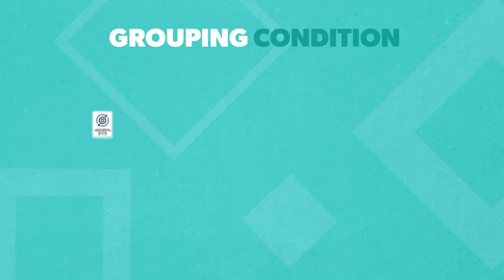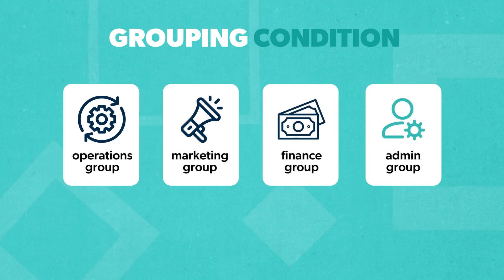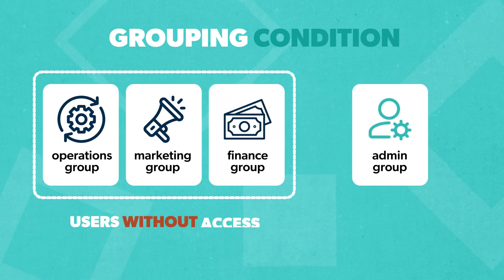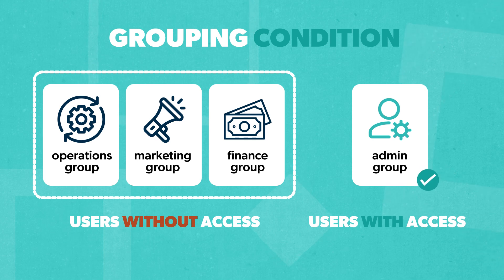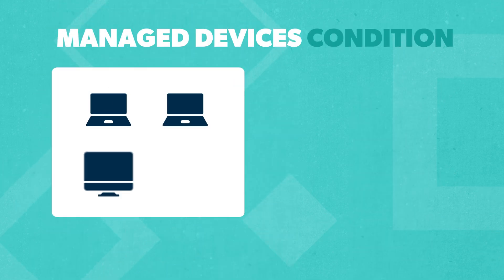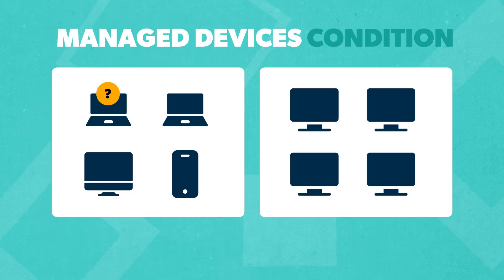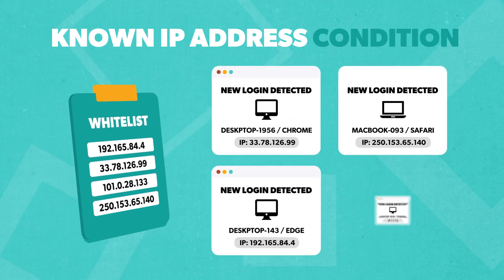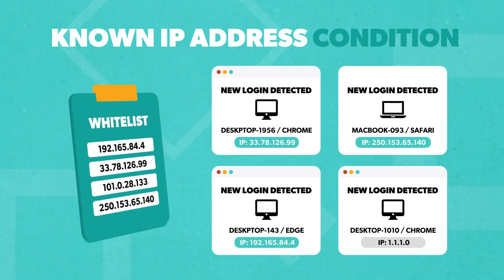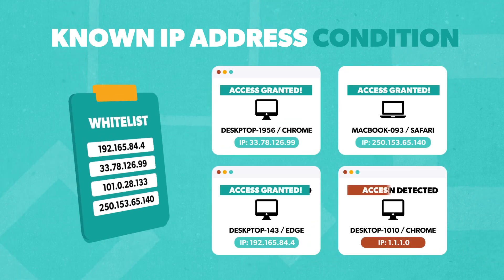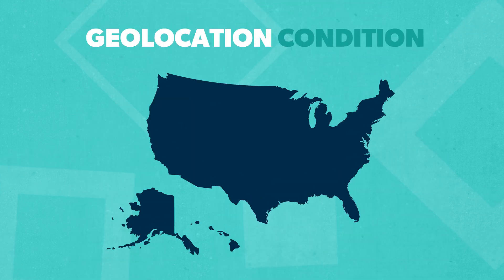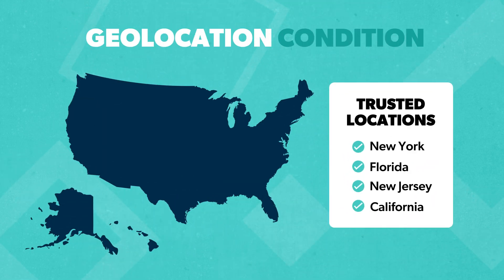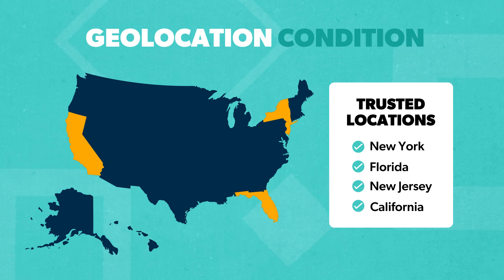With a grouping condition, the user must belong to a specific group in your directory, such as the admin group, for access to be granted. With a managed device condition, the user will only be granted access if they're using a company-managed device. With a known IP address condition, the user must be using a whitelisted IP address or a VPN before access is granted. And with an approved geolocation condition, the login attempt must come from a trusted location for access to be granted.